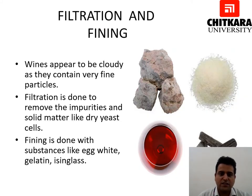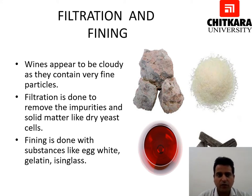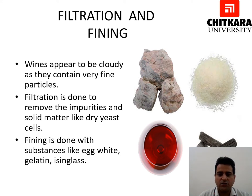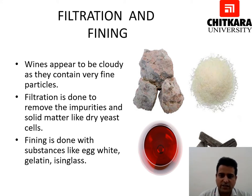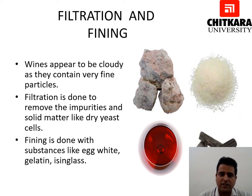The next step is filtration and fining. Wines appear cloudy as they contain very fine particles. Filtration is done to remove these impurities and solid matter like dry yeast cells, known as lees. Fining is done with substances such as egg whites, gelatin, and isinglass — isinglass being the bladder of the royal sturgeon fish. In this photograph, you can see the various filtration and fining equipment used to clarify and refine the wine.